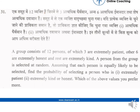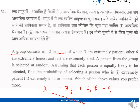Let's understand this question first. We have a group of 12 persons: 3 are extremely patient and 6 are extremely honest. If we sum this, we come to 9 people, with 3 people still remaining. The rest of the question says those 3 are extremely kind. So K is for kind, H is for honest, and P is for patient.